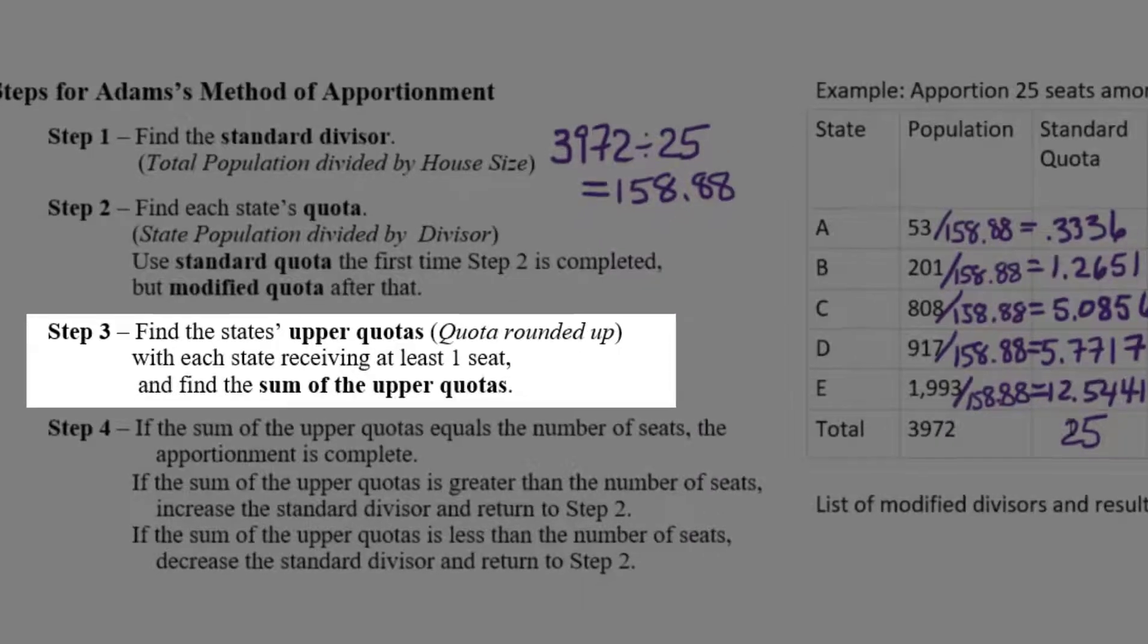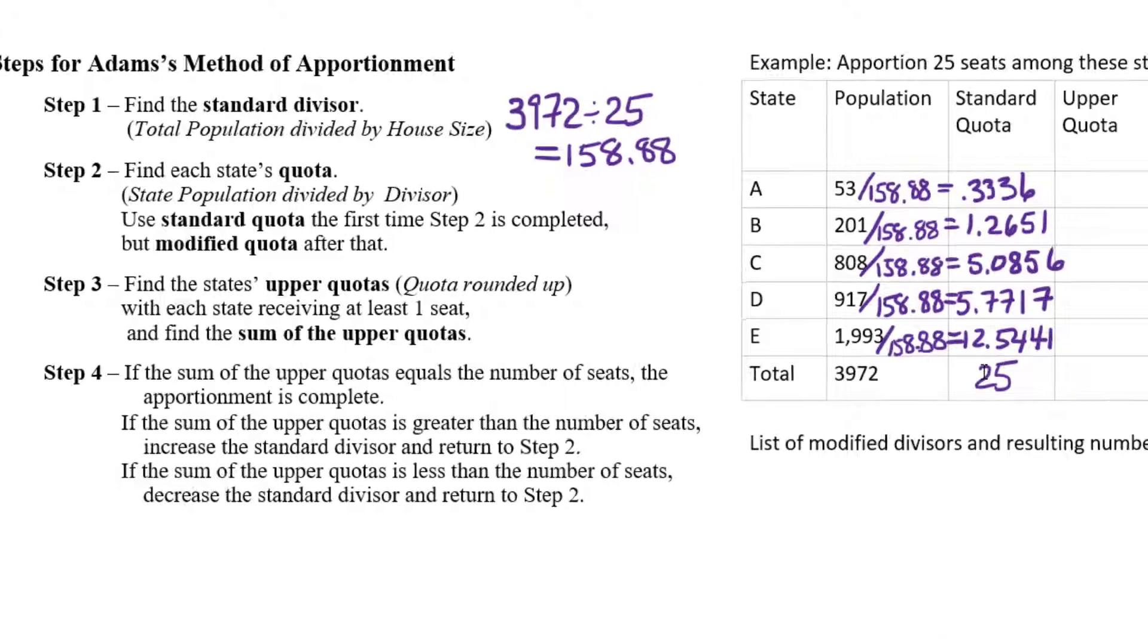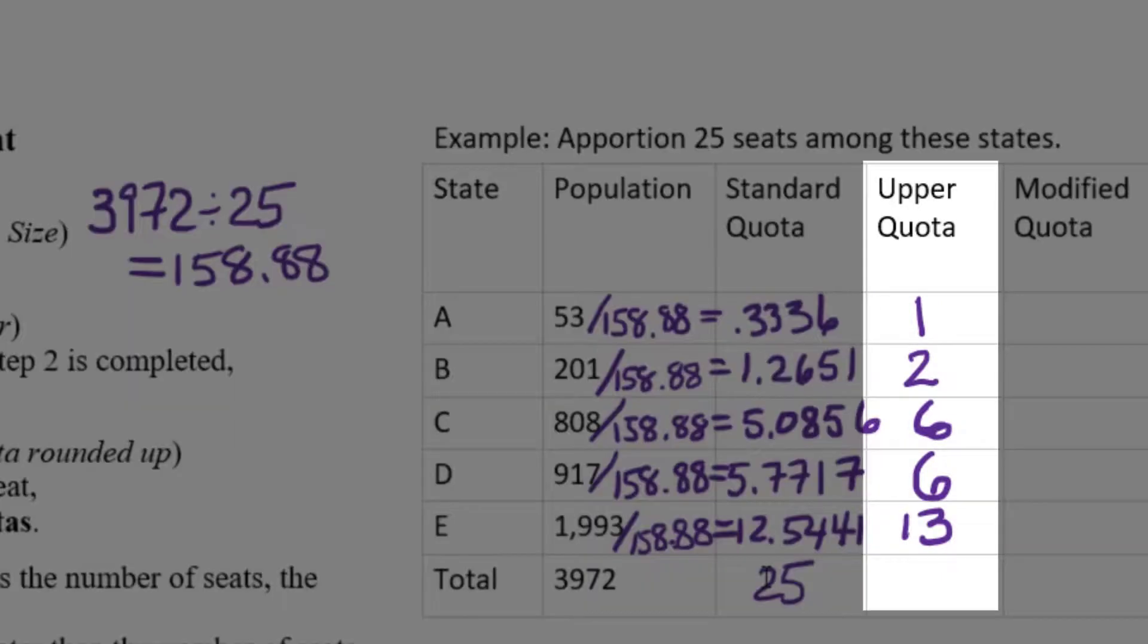So the way that Adams deals with these extra pieces of representatives is to give each state their upper quota. So what's the upper quota? You basically take each standard quota and round up to the next whole number. So for example, 0.3336 is less than the number one. 1.2651 is just below the number two and so on. So notice we're not using traditional rounding here. We are always rounding up, regardless of how small the decimal part is. And then we're going to add up these upper quotas and see how many seats that would take to give everybody their upper quota. So this is going to be one and two is three and six is nine and six is 15 and 13 is 28. So if we gave everybody their upper quota, then we would have to hand out 28 seats. And of course that's too big.